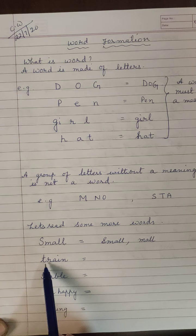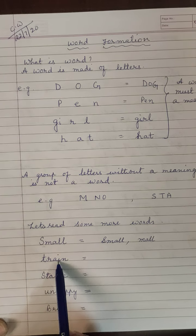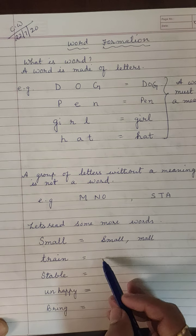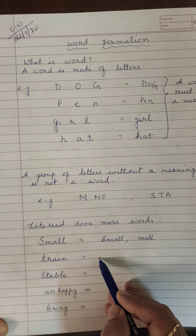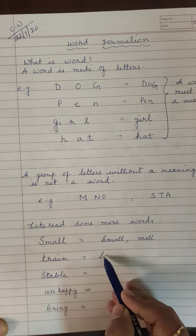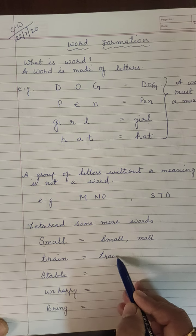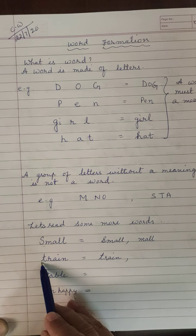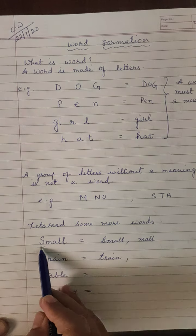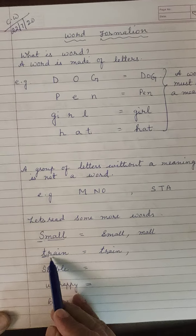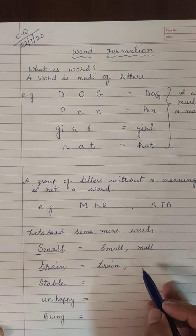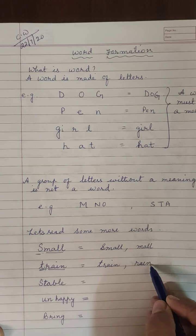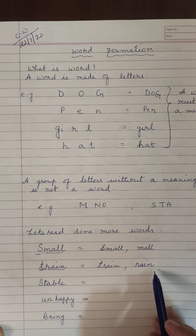Next, T, R, A, I, N — 'train'. You know the railway train. So one word itself is 'train'. From these letters we can also make another word — 'rain'. R, A, I, N. Rain.